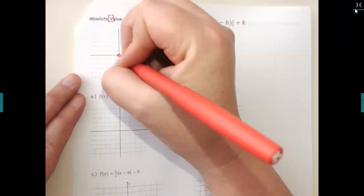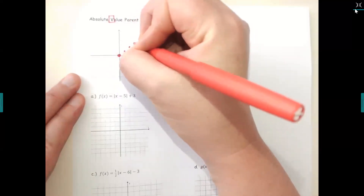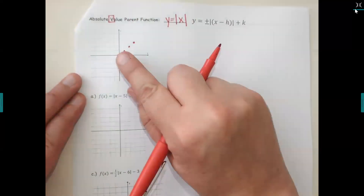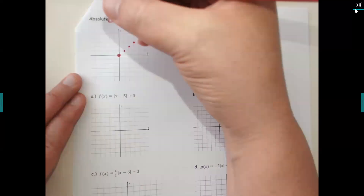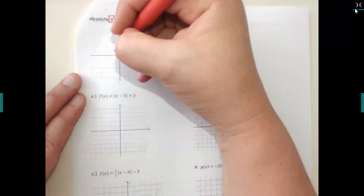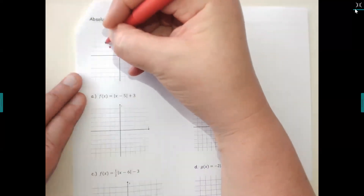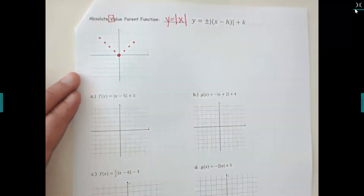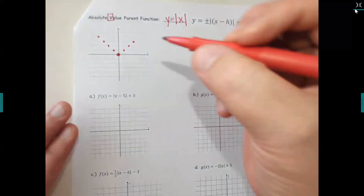Since I'm not putting any numbers in to change the slope, I'm going to keep the diagonal going. To make it a V, go up diagonally on one side and then up diagonally on the other side. The parent graph should have perfect diagonals on both sides.